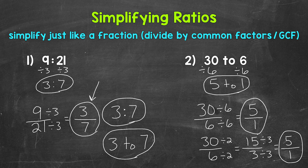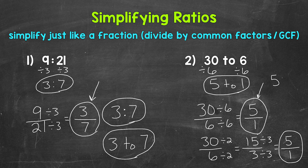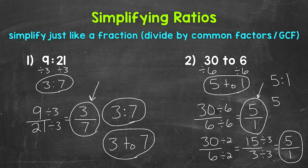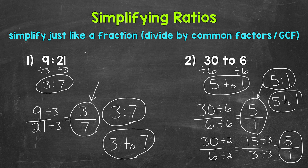And again, we can always rewrite our ratio in the form that we would like. So for example, we can take our fractional form and rewrite this using a colon, so 5 to 1, or using the word to. All of those ratios mean the same thing, 5 to 1.